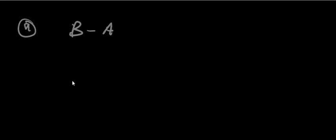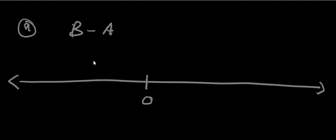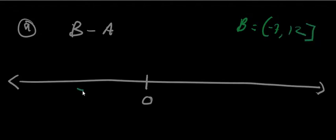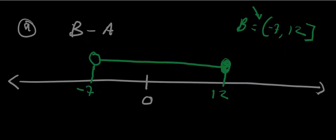For B minus A we are comparing set B and set A, so we draw the number line again and show both sets on it. Set B is from negative 7 to 12 written as open bracket negative 7 comma 12 close block bracket. Negative 7 is not part of the set so we use an unshaded circle, and 12 is part of the set so we use a shaded circle.